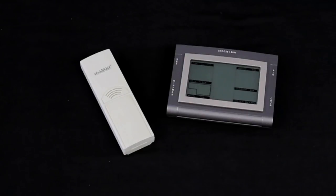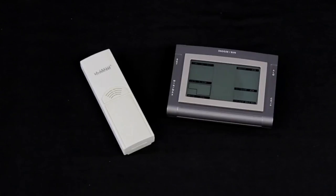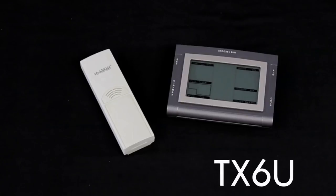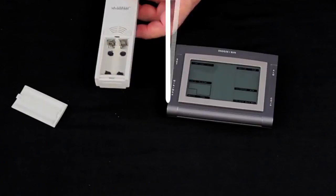I'm Terry from La Crosse Technology and right now we're going to be looking at the WS9611 weather station. The WS9611 comes with a TX6 sensor and the first thing we do with this station is bring the cover off the sensor and put our batteries into it.